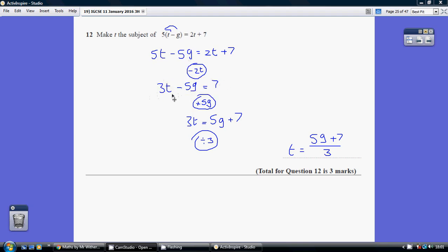So we've got all our t's on the left. Now let's try and get all our non-t's onto the right. So we need to undo this minus 5g. So let's add 5g to both sides, giving us 3t equals 5g plus 7.